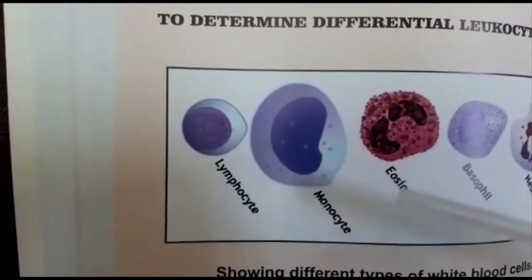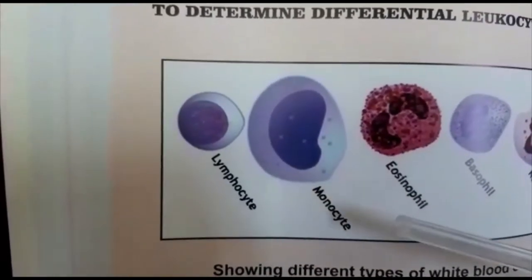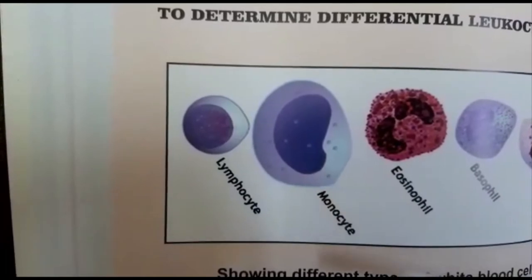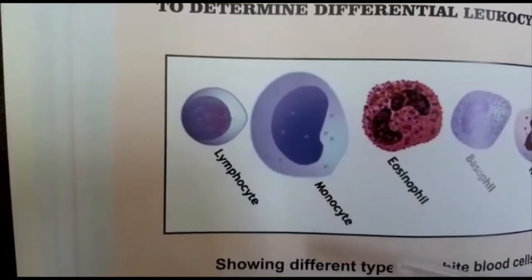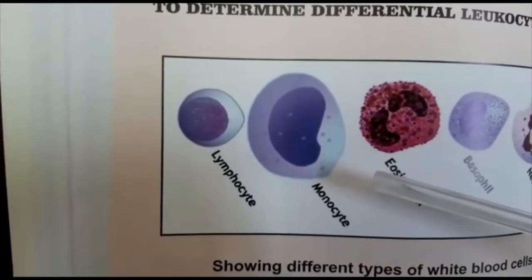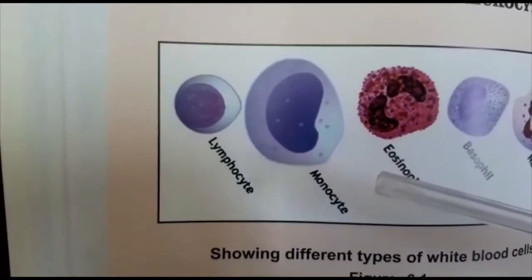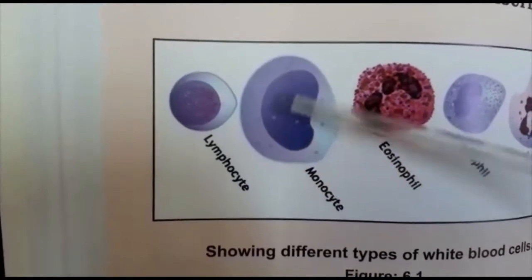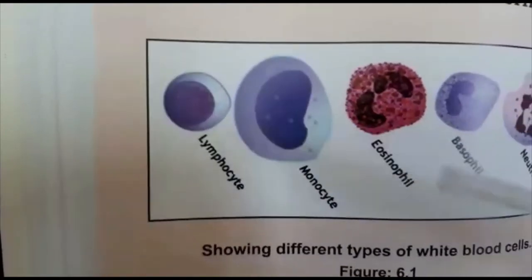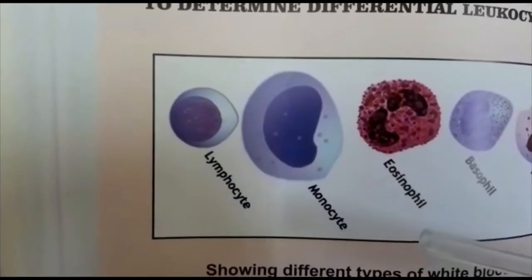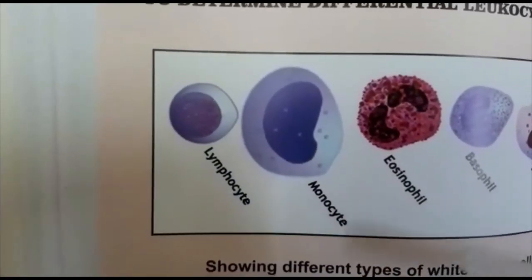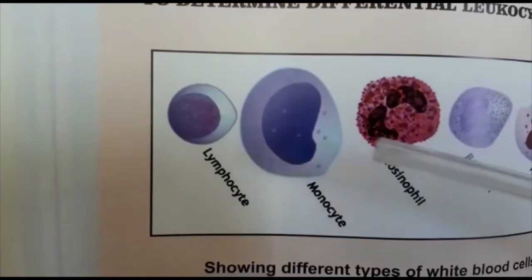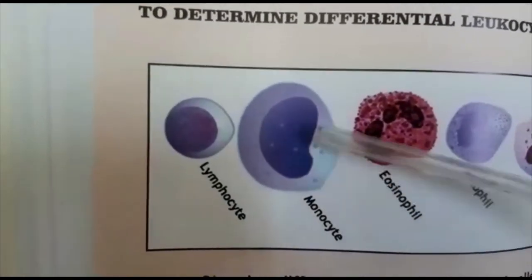Monocytes are 2–8% normally. The nucleus is blue-purple, indented from one side, and kidney-shaped — you can see the kidney shape here. The cytoplasm is pink in color and the nucleus is positioned towards one side.